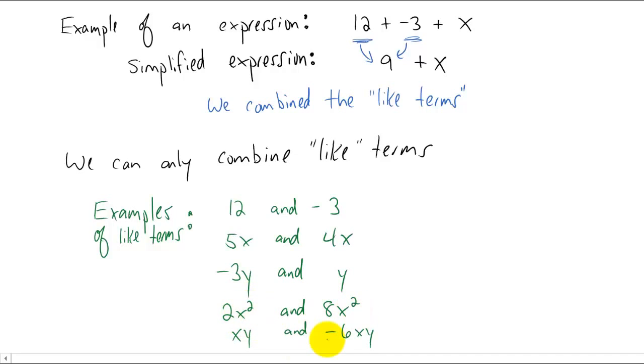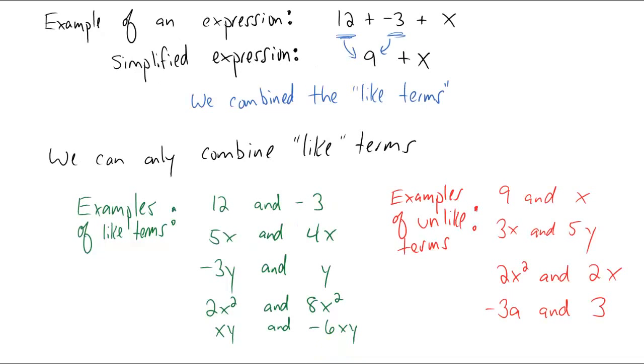So let's look at some examples of terms that are unlike terms. Here in red are some unlike terms. Nine and x from above we could not combine because the term nine does not have an x in it. Three x and five y are unlike terms because in this term there's an x, in this term there's a y, there's different variables. Two x squared and two x look alike. They have the same variable which is x and they even have the same coefficient which is two. But the power on x here is two, and the power on x here is one, so they are not like terms, they are unlike terms.